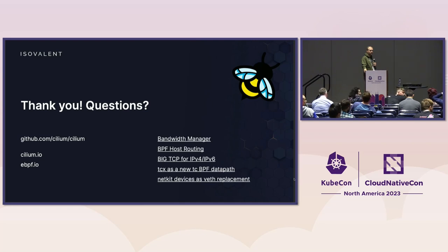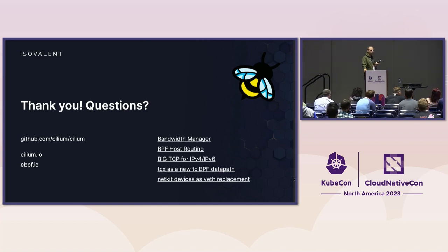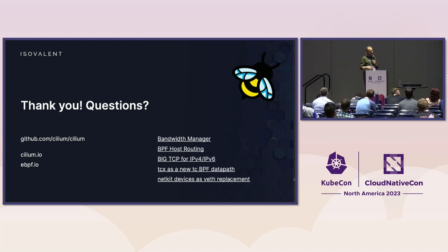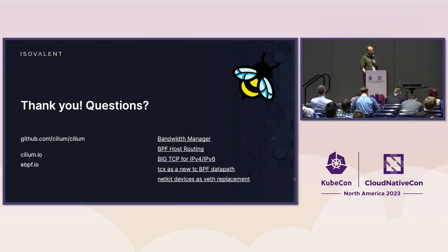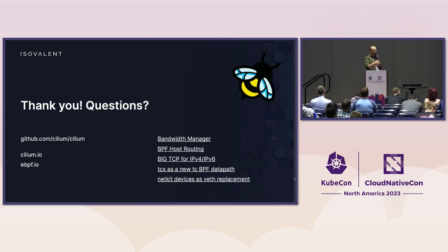Question: A lot of the optimizations mentioned today require relatively recent kernel versions. Does Cilium detect which features are available based on kernel version, or does it have stricter minimum requirements now? Answer: The minimum kernel requirement for Cilium is right now 4.19 — it's really old. Before that we had 4.9, which we recently bumped because it's super old and out of date. But we basically detect whether a feature can be used, and it's also up to the user depending on what constraints they have, so you can opt into features.